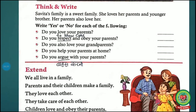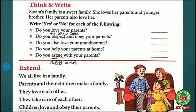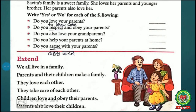Now come to the next part. Read the first line: we all live in a family. Some are living in a big family and some in a small family. Next line: parents and their children make a family. So who makes a family? Parents and their children. They love each other — parents love their children, and it is also the moral duty of children that they should love their parents. They take care of each other, so parents and children take care of each other. Next line: children love and obey their parents.